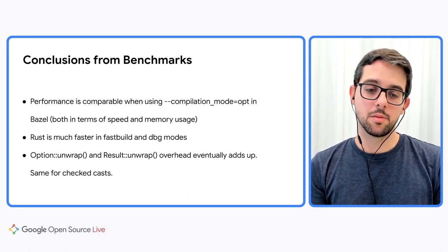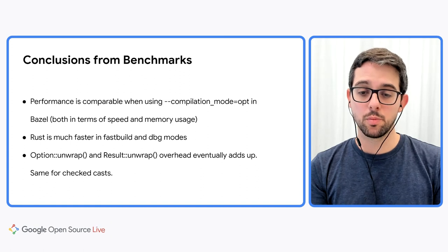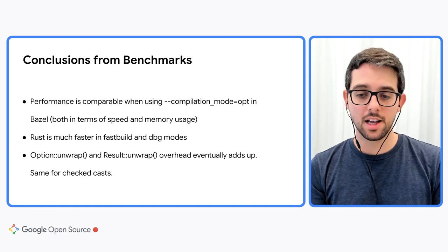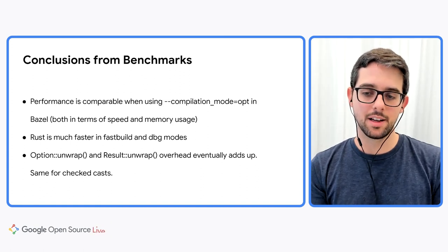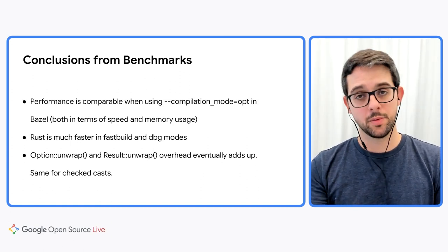I then created a commit for investigation purposes where I replaced all checked casts with blind casts, and this also caused some performance improvement.